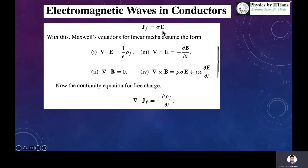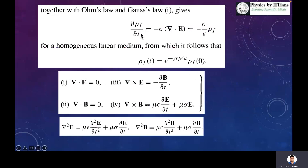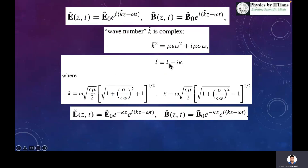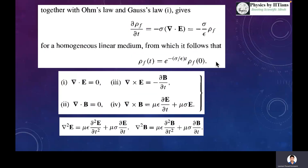If you combine Ohm's law with this continuity equation, you can write: del rho_f over del t equals negative of sigma times the divergence of E, or equivalently negative of (sigma over epsilon) times rho_f. This is a first-order linear differential equation that can be simply solved. The solution for rho as a function of time will be rho_0 times e to the power of minus (sigma over epsilon) times t, where rho_0 is the initial value of rho.